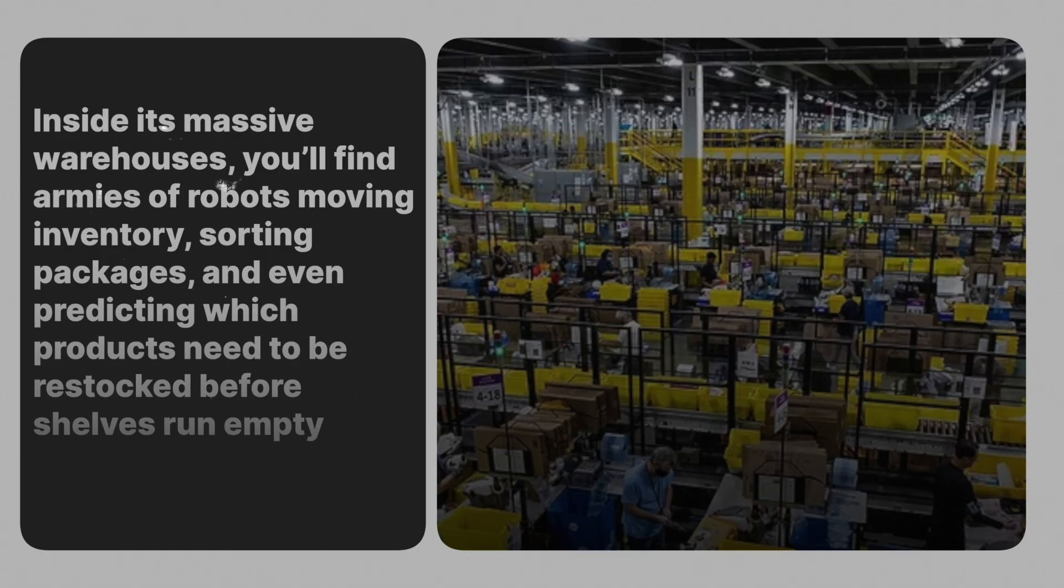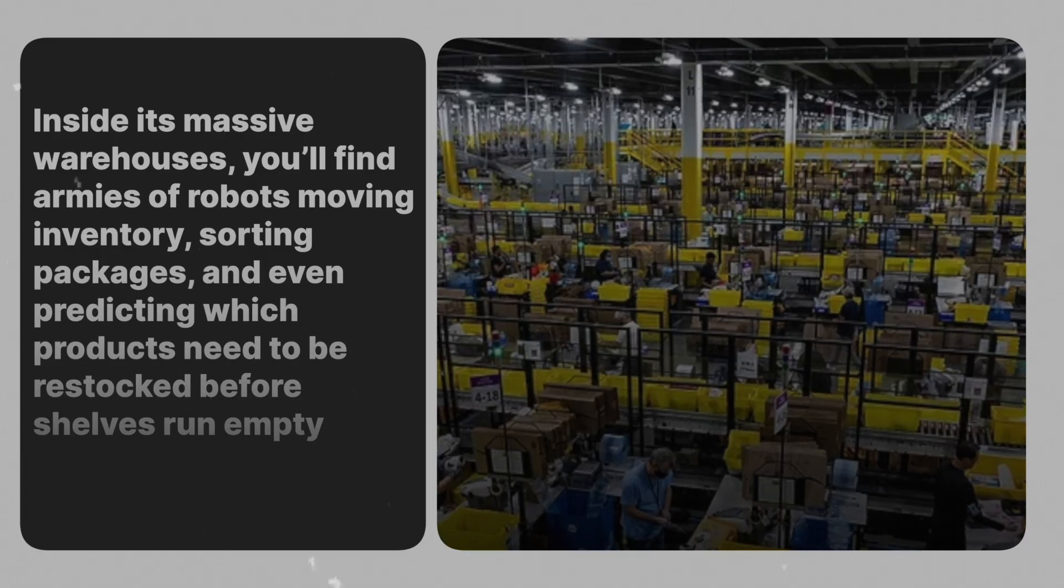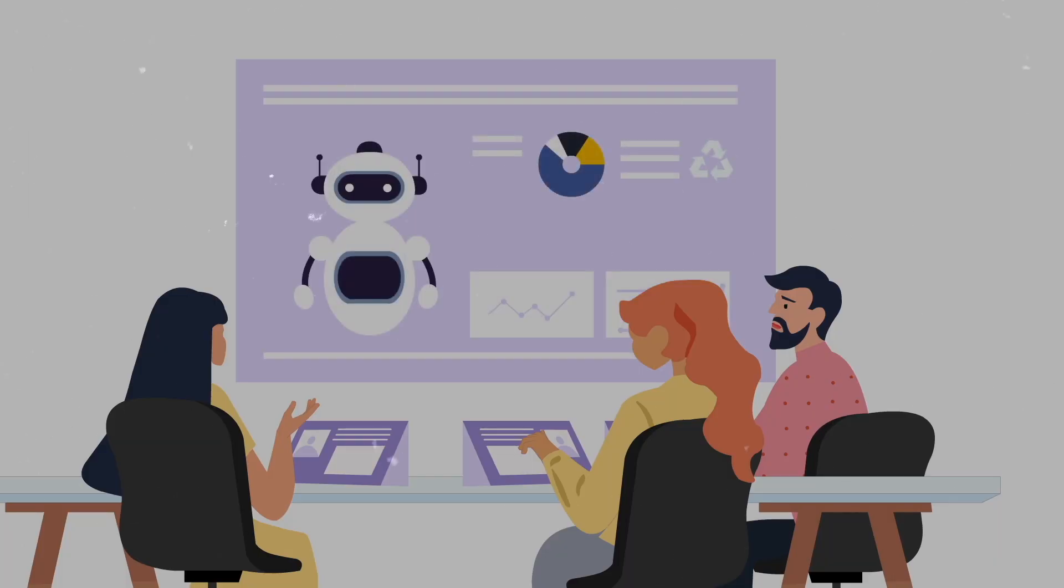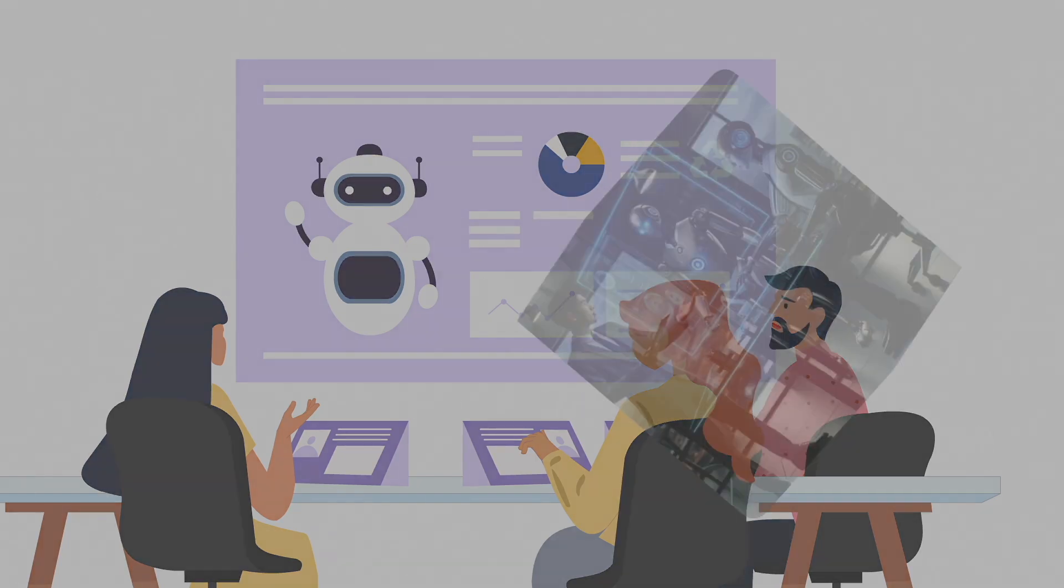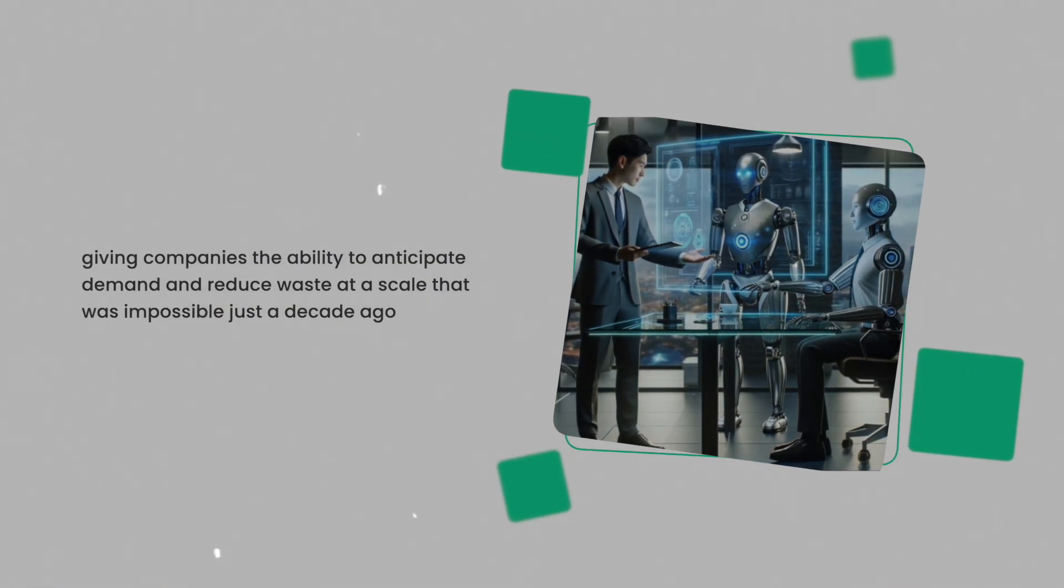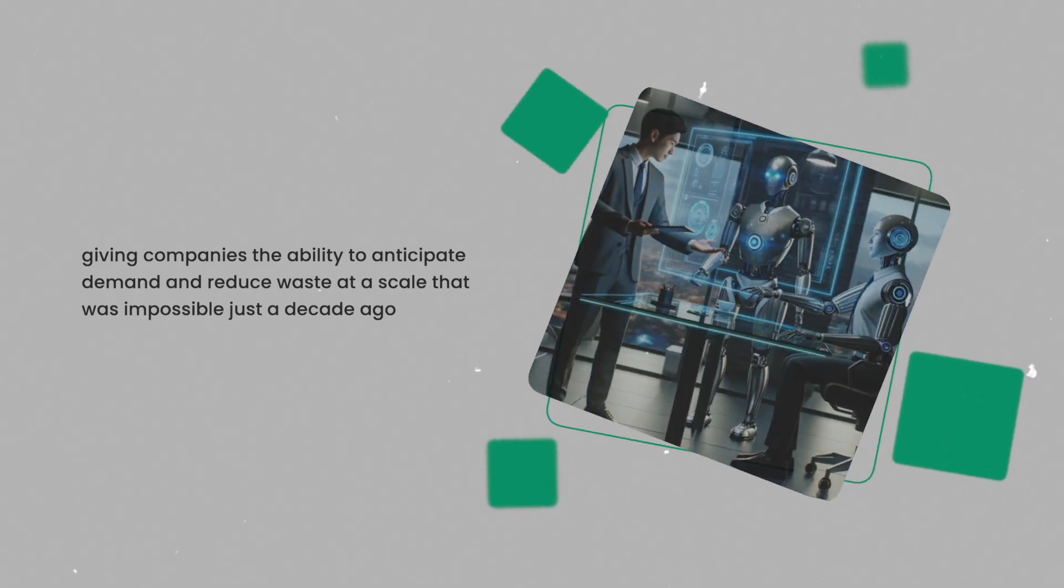you'll find armies of robots moving inventory, sorting packages, and even predicting which products need to be restocked before shelves run empty. This isn't just convenience, it's a revolution in logistics. The predictive models behind these robots are powered by machine learning, giving companies the ability to anticipate demand and reduce waste at a scale that was impossible just a decade ago.